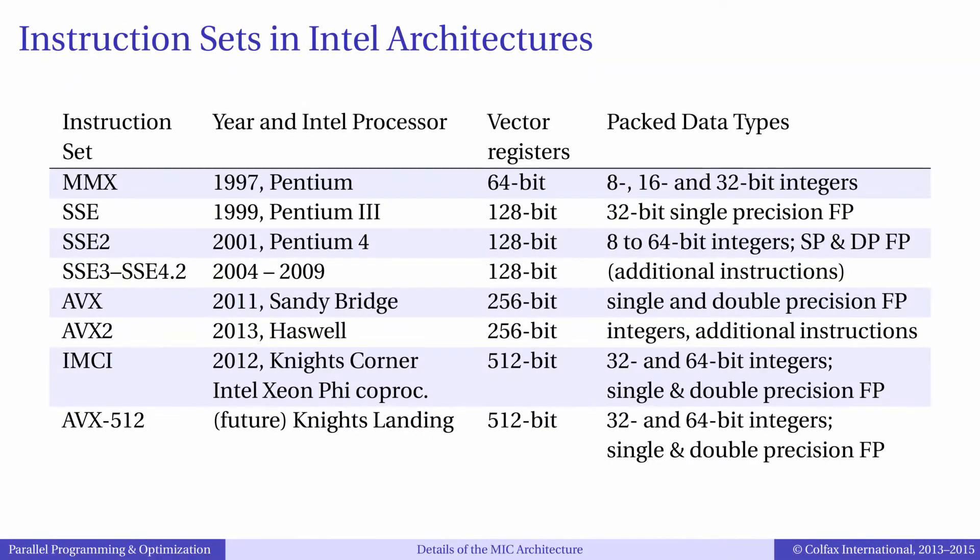As we started speaking of vector instruction sets, let us revisit a table that we have seen earlier. It lists vector instruction sets supported by Intel processors starting from the late 1990s. It reminds us of the instruction set supported by the latest Intel CPU architecture code-named Haswell, and by the first generation of Xeon Phi instruction set IMCI, and by the upcoming second generation instruction set AVX-512.